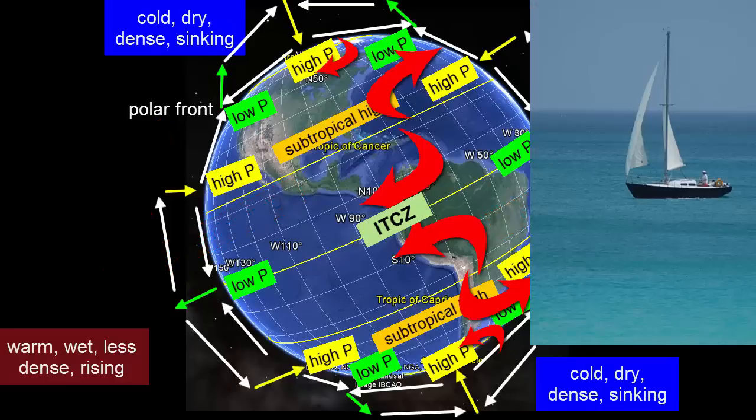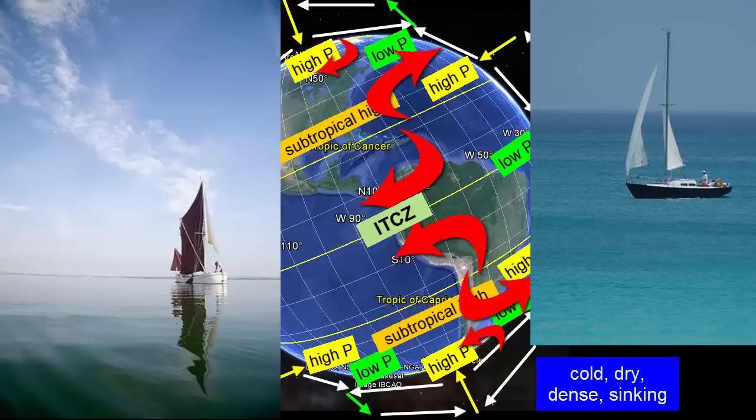Imagine traveling around this globe in a sailboat. You need the wind to move from point A to point B. Are there any locations where the winds would fail you? Where air is not moving horizontally, but instead vertically? These areas receive special names from the mariner community because of the history of life at sea in these locations and the challenges encountered.